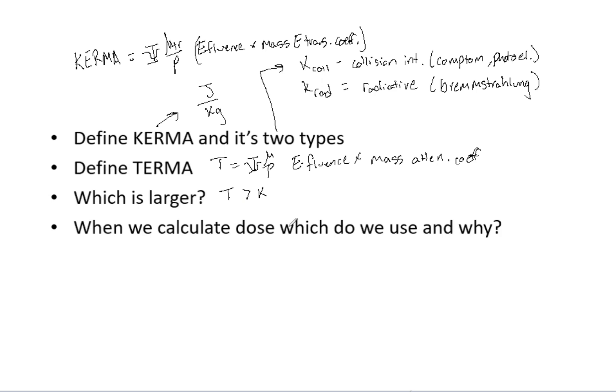And when we calculate the dose, which do we use and why do we use that? So when dose is deposited, I'll put in small areas. That is going to resemble the collisional Kerma. And as those particles release the energy locally, the radiative Kerma carries the dose away. So carries dose away.